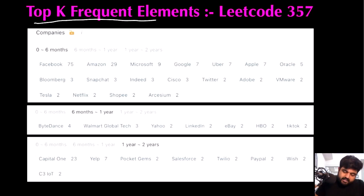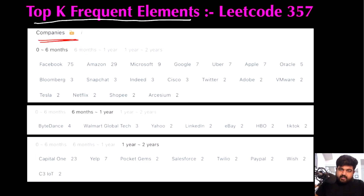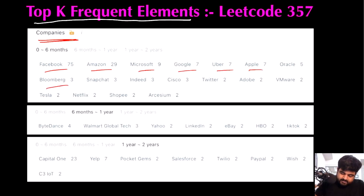Today we are going to do the Top K Frequent Elements LeetCode problem. If we see some of the companies where I want to get a job, this question has already been asked at companies like Facebook, Amazon, Microsoft, Google, Uber, Apple, Bloomberg, Snapchat, Twitter, Tesla, Netflix, ByteDance, LinkedIn, eBay and TikTok. So that's why I am paying my utmost attention.